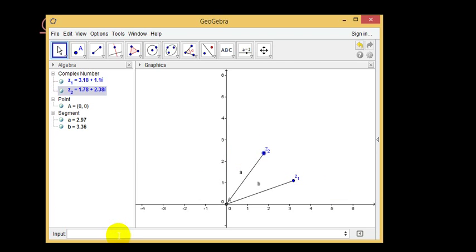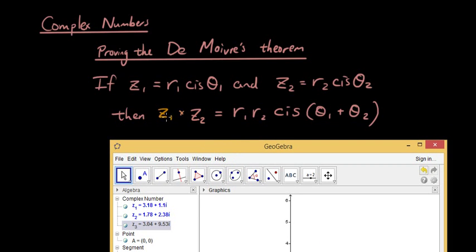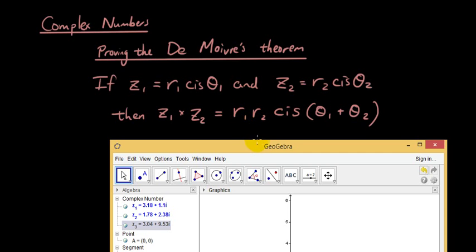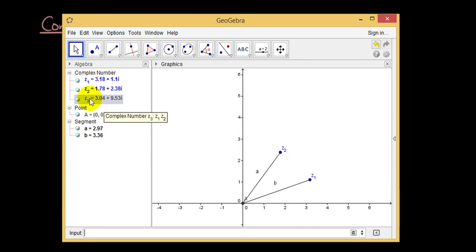Now if I create another complex number by going z1 times z2, which is what De Moivre's theorem is saying, when we got two complex numbers z1 times z2, then the magnitude becomes the product of our original magnitudes. So the magnitude of z3 should be 2.97 times 3.36,